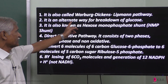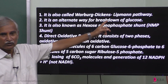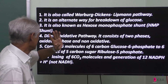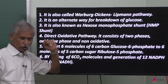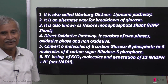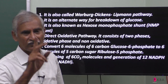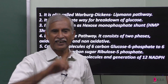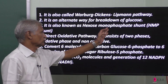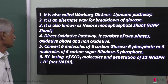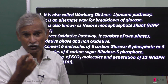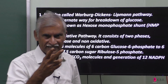It is an alternate way for breakdown of glucose. It is also known as the hexose monophosphate shunt — a single phosphate group with a six-carbon atom. It is a direct oxidative pathway, whereas in respiration, glucose oxidation leads to indirect ATP production.